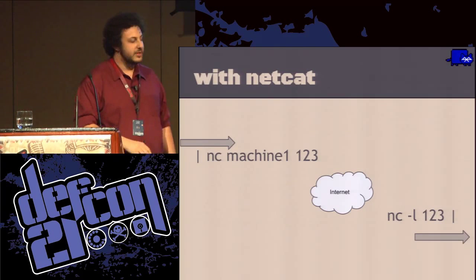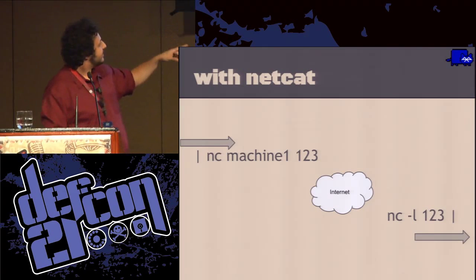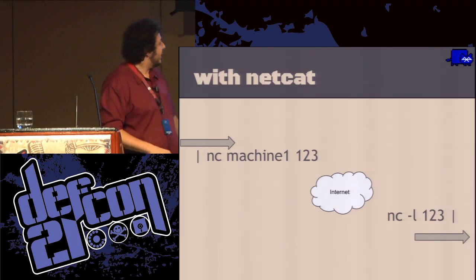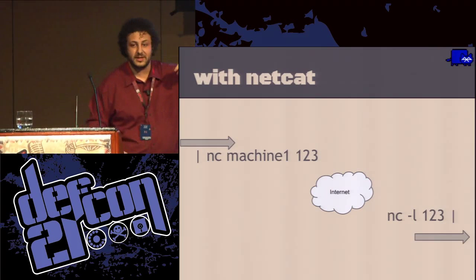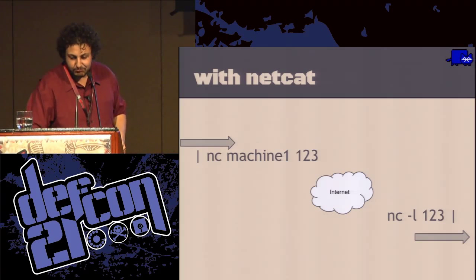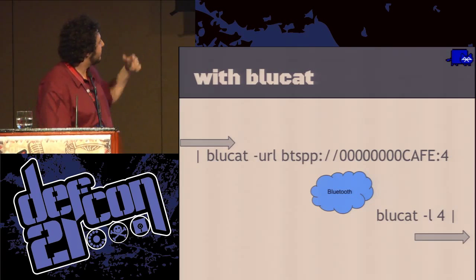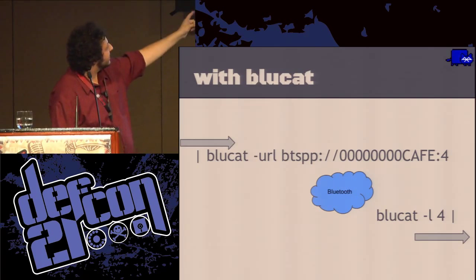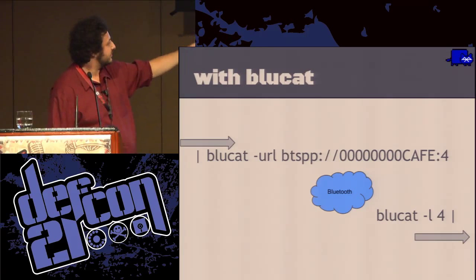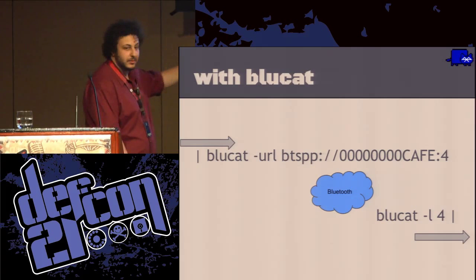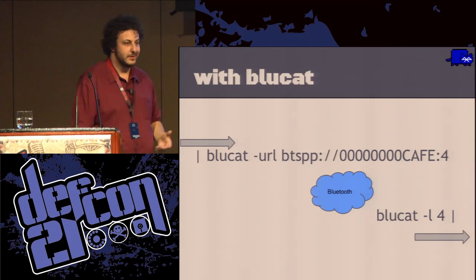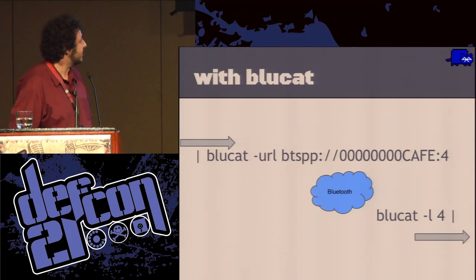Simple inline replacement for Netcat: with Netcat you specify a machine name and port to connect to a server listening on, say, port 123. With BlueCat, you listen on RF channel 4 and connect to a MAC address on RF channel 4 — it establishes the same connection. You can send music or movies; throughput is about 100K so it's not great, but it does work with music.